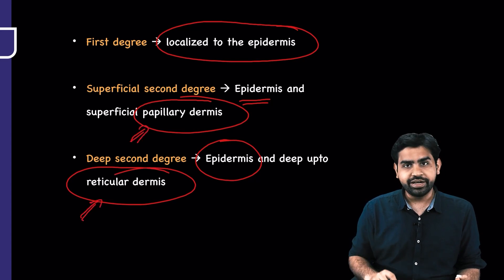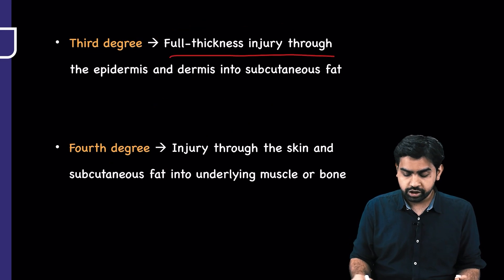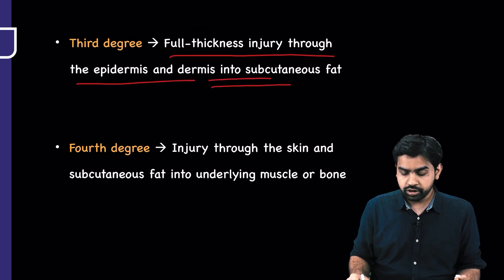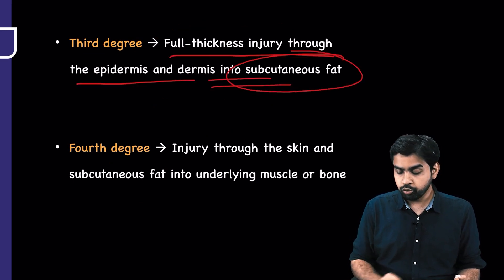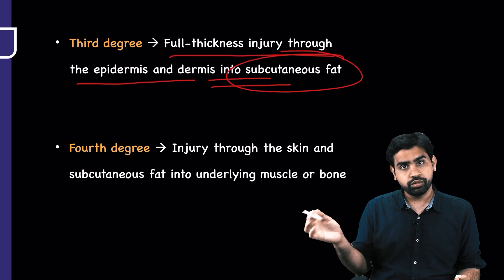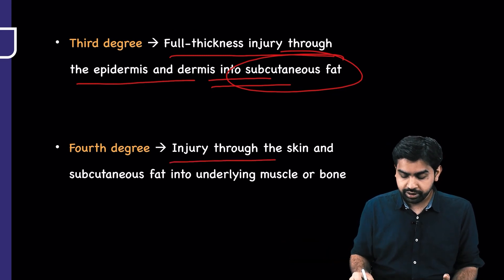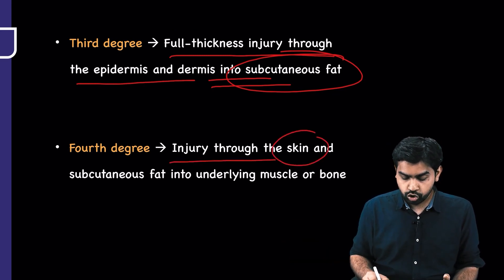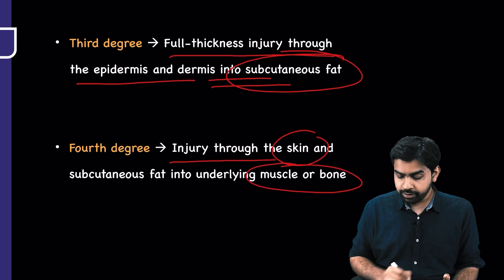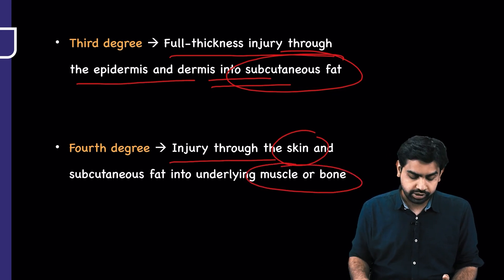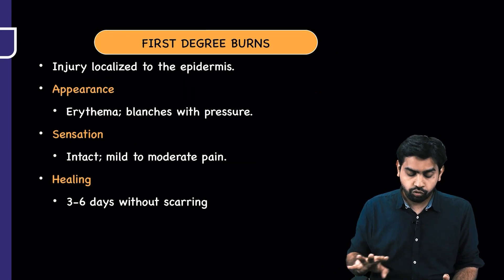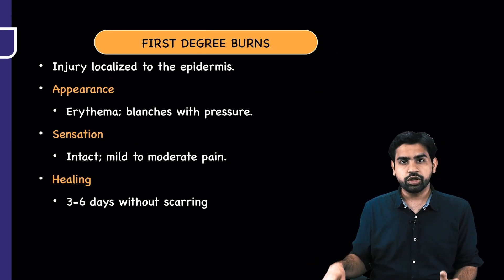Third degree burns are a full thickness injury through the epidermis and dermis, also involving the subcutaneous fat. In fourth degree burns, there is injury to the skin and subcutaneous tissue, and the underlying muscles and bones are also involved.